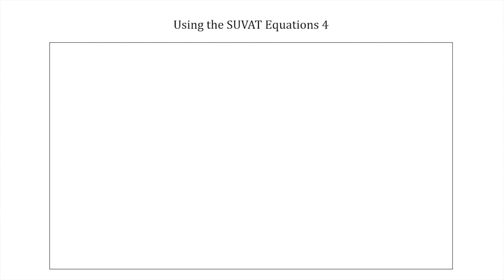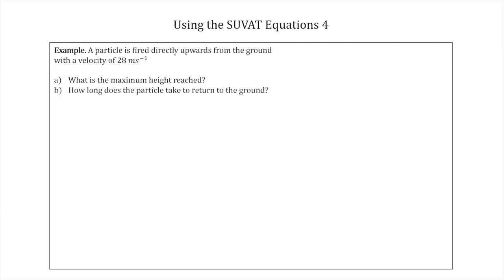In this video, we're going to once again be looking at the SUVAT equations. We're going to solve another example question. Once again, we're only going to be considering motion in one dimension. So the question is, a particle is fired directly upwards from the ground with a velocity of 28 meters per second. What is the maximum height reached? That's part A, and part B is how long does the particle take to return to the ground?